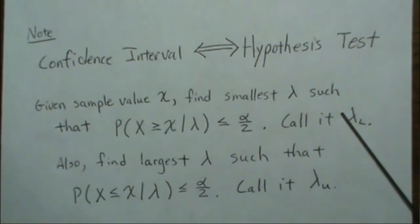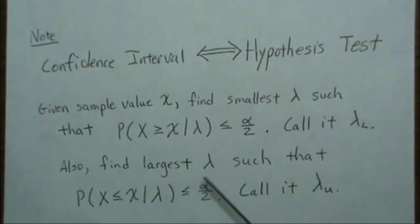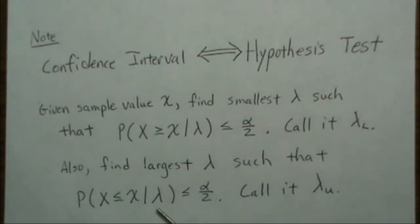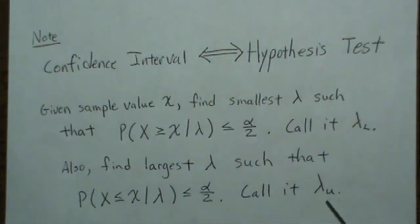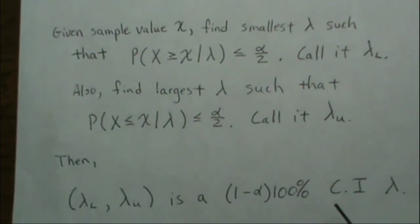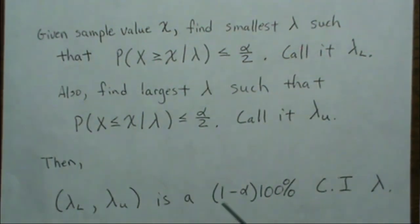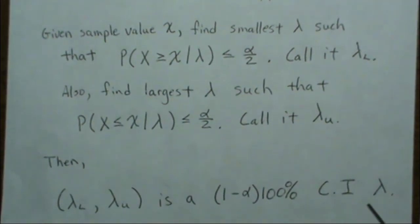To find the right side, we want to find the largest lambda such that the probability of being less than our sample value is less than or equal to alpha over 2. We call that lambda_U, the upper endpoint. Those two values end up being a confidence interval for lambda.